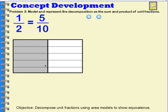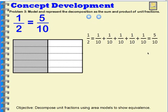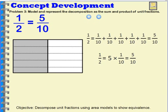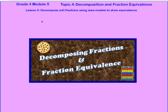Let's write an addition sentence: one-half equals one-tenth plus one-tenth plus one-tenth plus one-tenth plus one-tenth, which equals five-tenths. I can also show it with multiplication: one-half equals five times one-tenth, which equals five-tenths. That wraps things up for lesson 5, where we've been working to decompose unit fractions using area models to show equivalence.